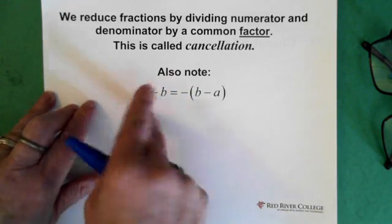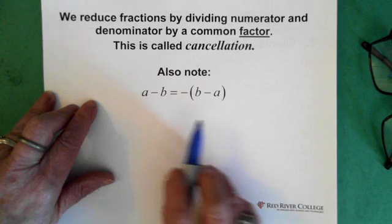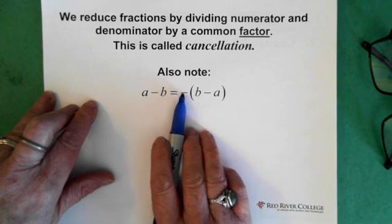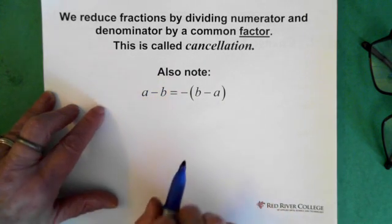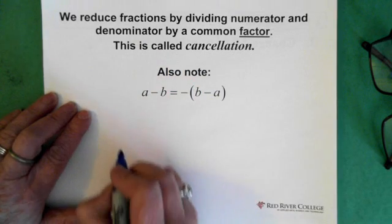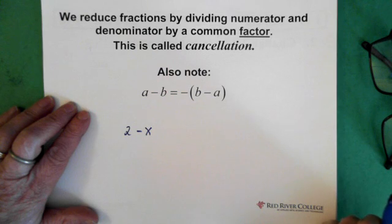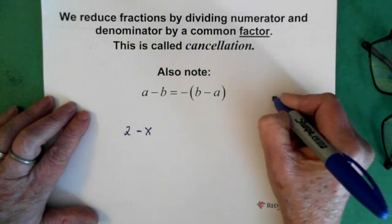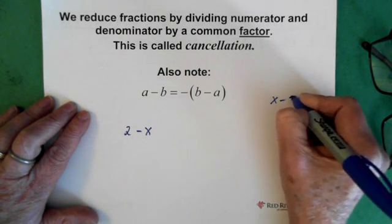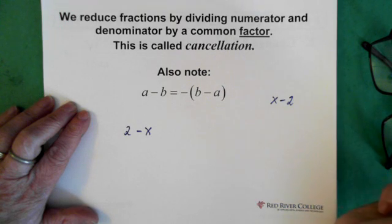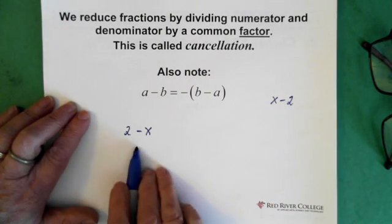We can sort of flip those two if we have to by multiplying that piece by a minus. Let me give you an example. If I have 2 minus x, and let's say I want x minus 2, that's what I want. But I have this.